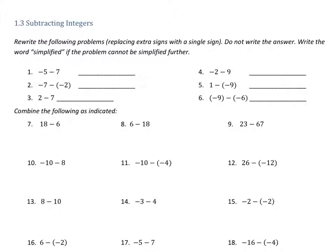So subtraction problems, as it turns out, we could write all subtraction problems as addition problems. But let's look at this first. They want us to rewrite these or to simplify them, or if it is simplified, then we'll just write the word 'simplified'. So this first problem right here, negative 5 minus 7, that looks like we can't really change the sign to make that simplified any further, so we'll just say that this one is simplified.